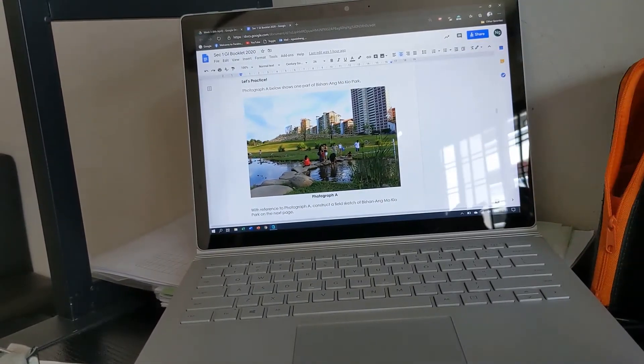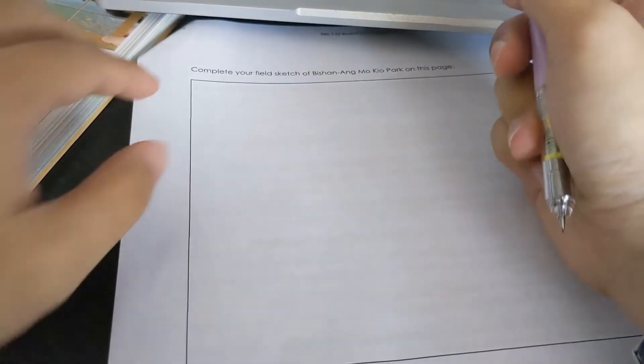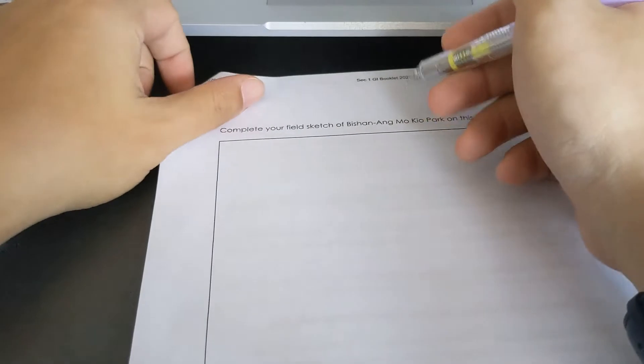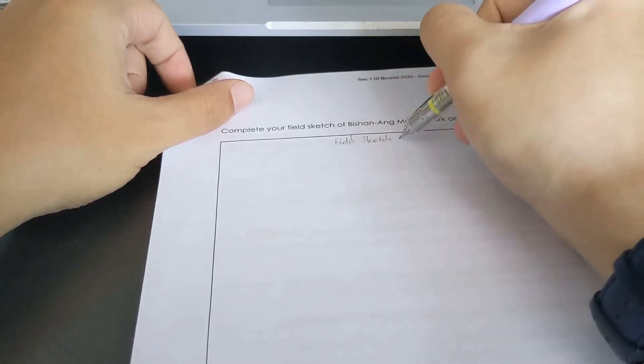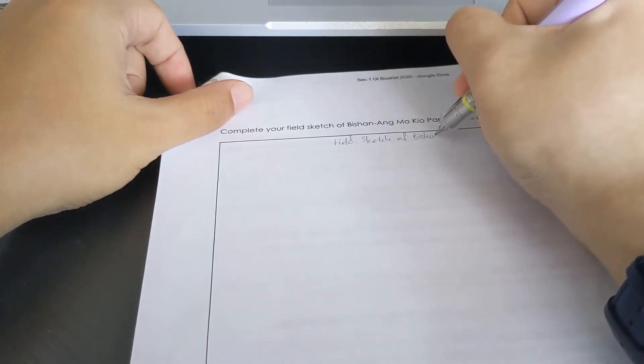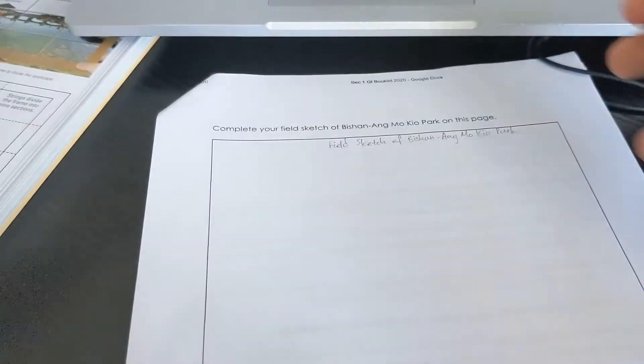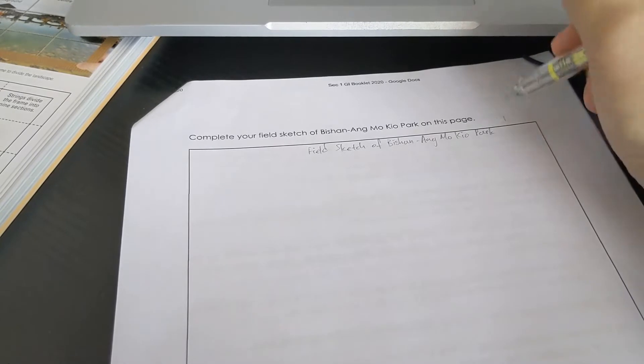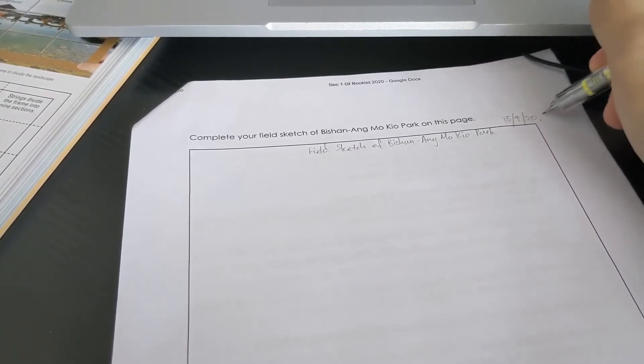What we will do is this picture over here, I will actually sketch it down. In order to do a field sketch, first thing first, as per your line and bar graph, you need to provide an appropriate title. So in this case we can say, field sketch of Bishan Ang Mo Kio Park. And in your field sketch, it is important for you to include the date and possibly the time as well, because on different days there may be different conditions. So today is the 15th, so we write 15 of April. Let's say we collected this in the afternoon, so it will be 3 pm.